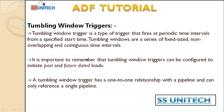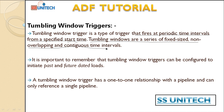The tumbling window trigger is a type of trigger that fires at periodic time intervals from a specified start time. Tumbling window triggers fire on periodic time intervals like one hour, two hours, 15 minutes, or 30 minutes. On that interval it will be executing, and we have to specify the start date. The tumbling window trigger is a series of fixed-size, non-overlapping, and contiguous time intervals.